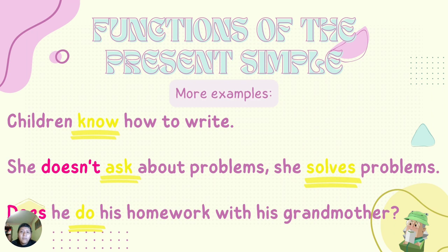Here we have more examples. Children know how to write — 'know' is the verb in present simple. She doesn't ask about problems, she solves problems. Here we have two verbs — 'asks' and 'solves' — and we have an auxiliary: 'doesn't'. This sentence is in the negative form.